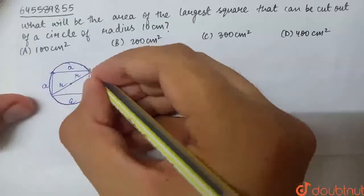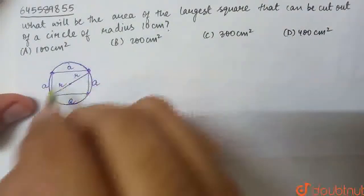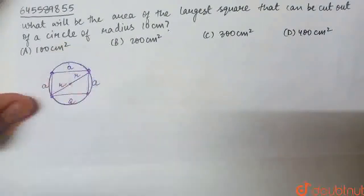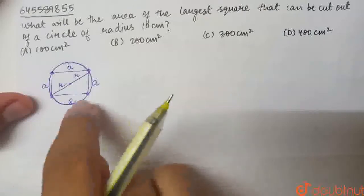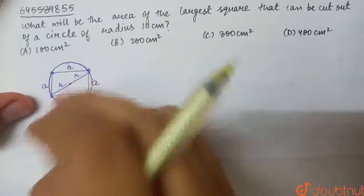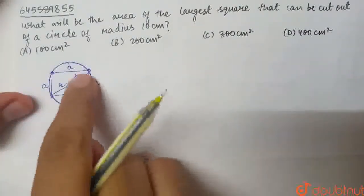These are our points, vertices. These should be placed on the circle. This will be a square that we can make in this circle. Now, we can cut this square because it's inscribed in the circle. So, this will be the largest square.